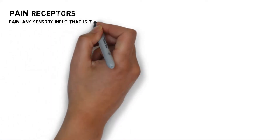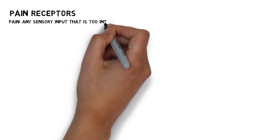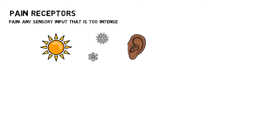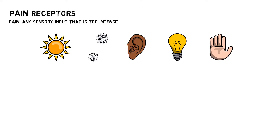Any sensory input can become painful if it is too intense — for example, heat, cold, noise, light, pressure, and such. The pain receptors are triggered when a stimulus becomes more intense than normal.